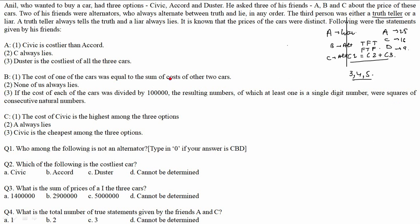Case 2: If B is a liar, then all of B's statements are false, and A and C should both be alternators. C's first and last statements are again contradictory, so C alternates F-T-F, making C's second statement true: 'A always lies.' But B is already a liar, and we can only have one liar or truth teller. So A cannot also be a liar. Therefore B being a liar is not possible.